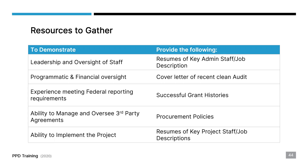To demonstrate programmatic and financial oversight, a key thing you can include in your application is the cover letter of a recent clean audit. You don't have to include the entire audit — that'll really eat up your page allowance — but if you include the cover letter for a clean audit, you can include it in your application. To demonstrate experience meeting federal reporting requirements, you can include a brief narrative on the recent grant histories that you've completed successfully, of the same size and scope as the one you're proposing.